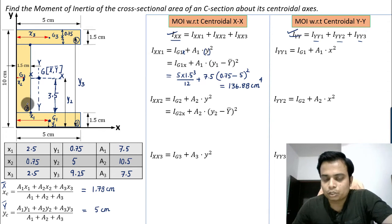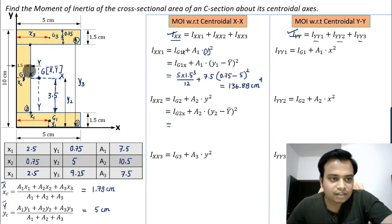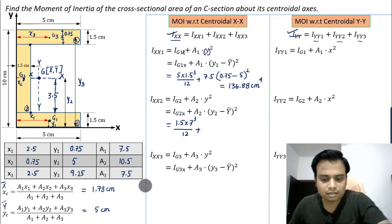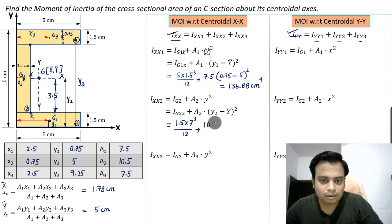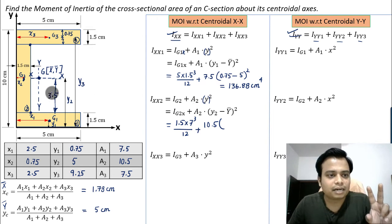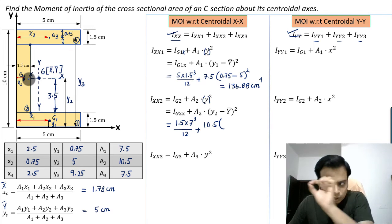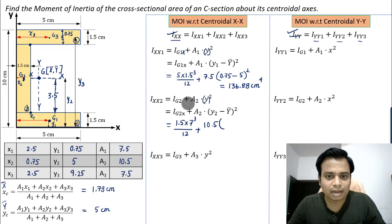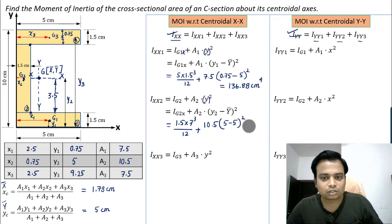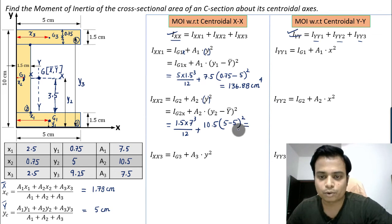For rectangle 2: b = 1.5, d = 7, so Ig2x = (1.5 × 7³)/12 + 10.5 × (y2 − ȳ)². Since y2 = 5 and ȳ = 5, the vertical distance between centroids is zero, so (5 − 5)² = 0. The final value is Ixx2 = 42.88 cm⁴.